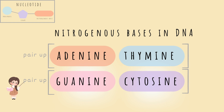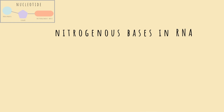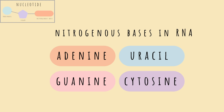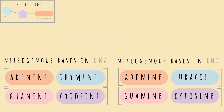These pairs are referred to as a base pair. The nitrogenous bases in RNA are the same with one exception: adenine, uracil, guanine, and cytosine. Adenine and uracil pair up, as do guanine and cytosine. The only difference is DNA has thymine and RNA has uracil. Thymine is only found in DNA, and uracil is only found in RNA.